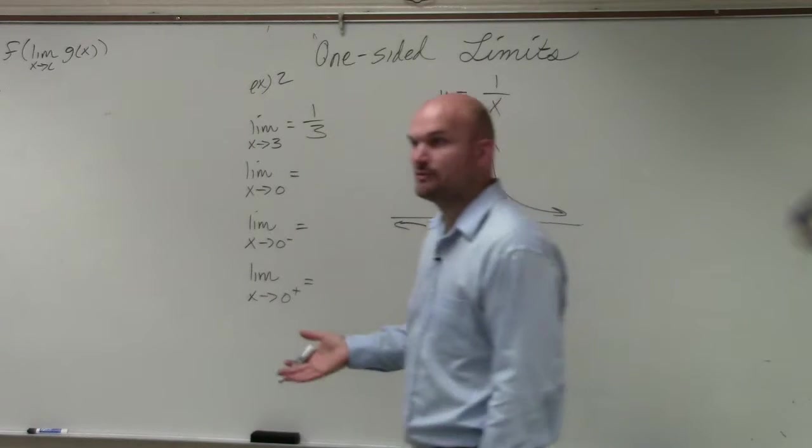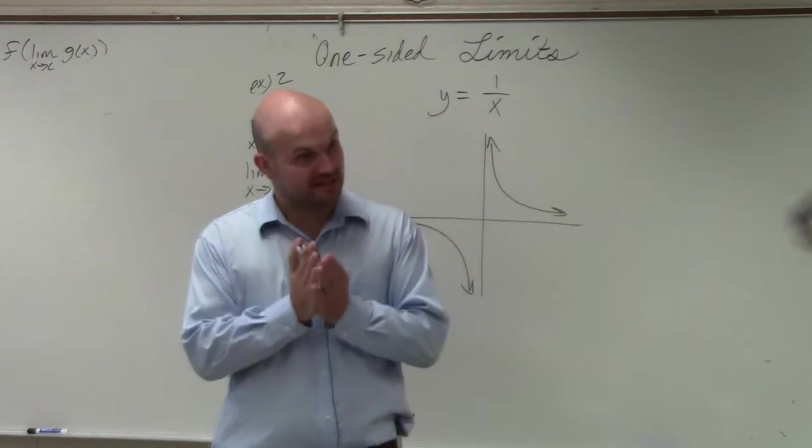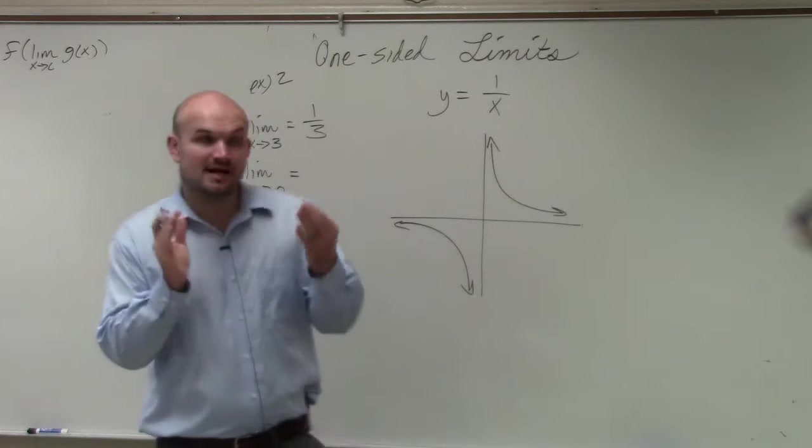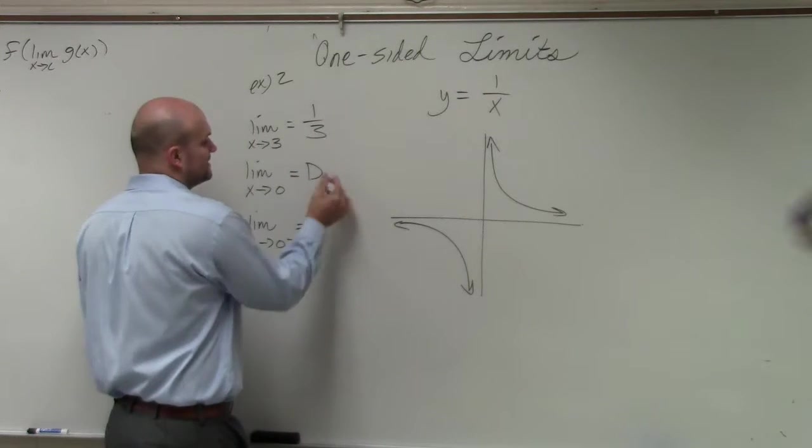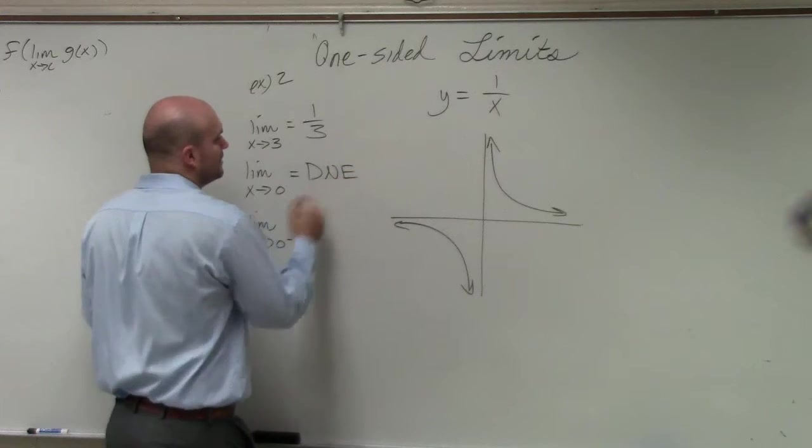And one thing we talked about when writing the limits is the limit has to be approached from both the same sides. So therefore, since they're not approaching the exact same value, the actual limit, the general limit at 0 does not exist.